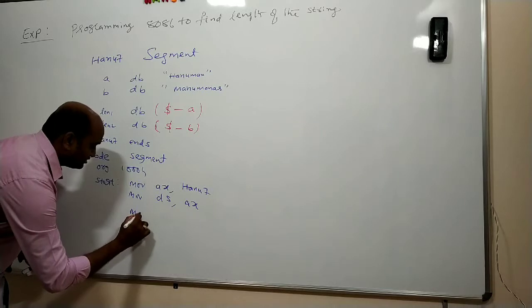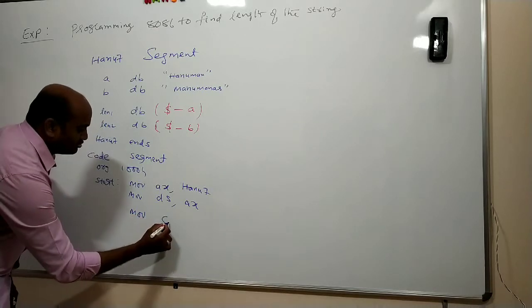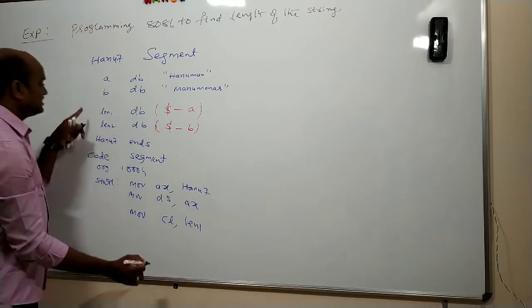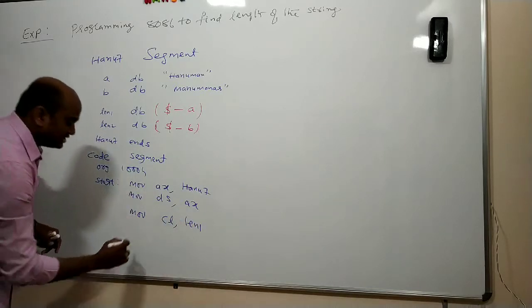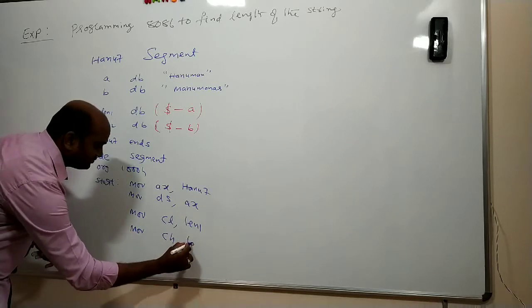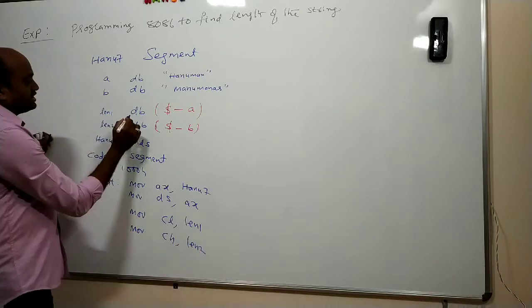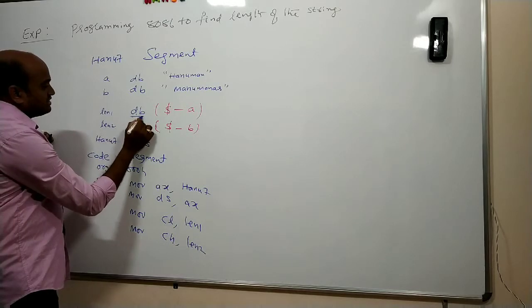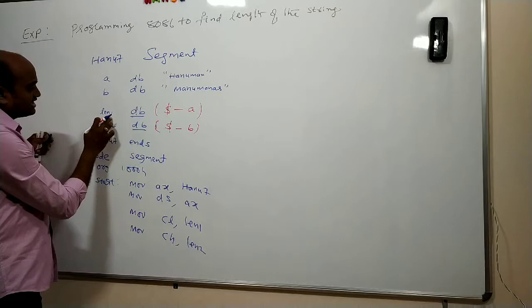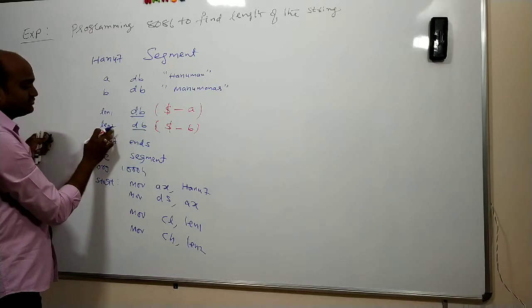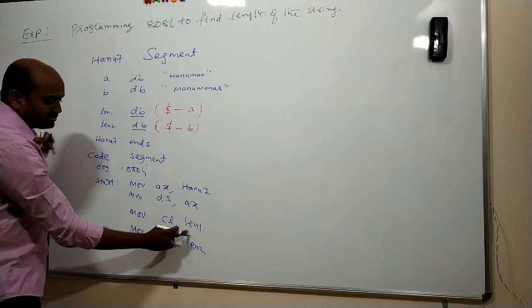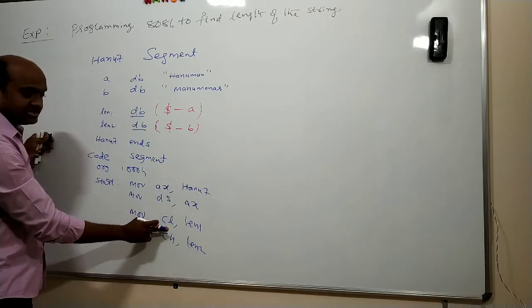Now let us copy the result into the desired location. MOV CL, LEN1. Whatever the length we have calculated here, that I am copying into CL register. Then MOV CH, LEN2. So here you observe clearly, I used DB defined byte and LEN2 also defined byte. So this variable is giving you 8-bit number. This variable is also giving you 8-bit number. So I copied this 8-bit number into the 8-bit register.